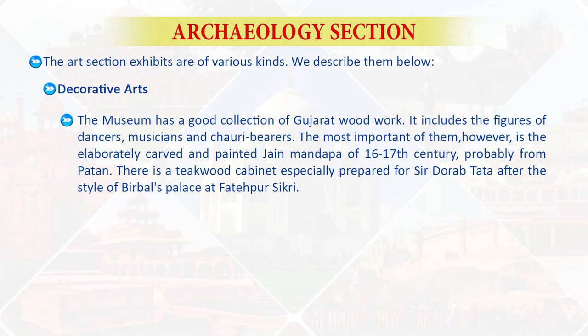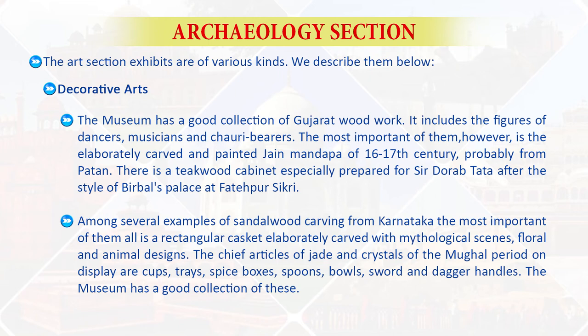The most important of these is an elaborately carved and painted Jain mandapa of the 16th–17th century, probably from Patan. There is a teak wood cabinet specially prepared for Sir Dorab Tata after the style of Birbal's Palace at Fatehpur Sikri. Among examples of sandalwood carving from Karnataka, the most important is a rectangular casket elaborately carved with mythological scenes, floral and animal designs. The chief articles of jade and crystal of the Mughal period on display include cups, trays, spice boxes, spoons, balls, and sword and dagger handles.